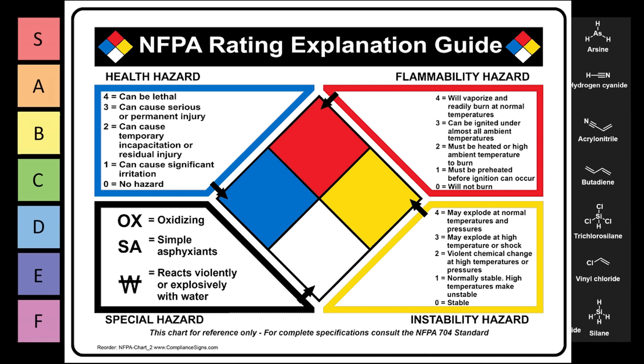In terms of instability, this is basically how likely it is to explode. And if it's a 4, basically you want to run away as quickly as possible. If it's a 3, it might be able to explode if exposed to high temperature or shock. If it's a 2, a big chemical change or high temperature or pressure could cause it to go. And if it's a 1, it's normally pretty stable, but maybe it's unstable at high temperatures.